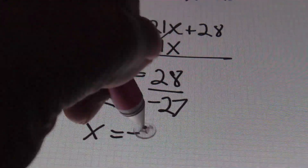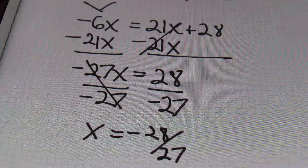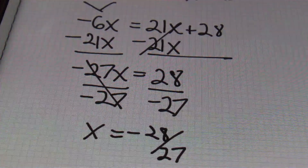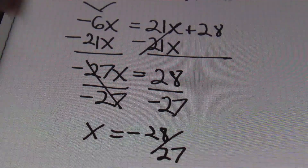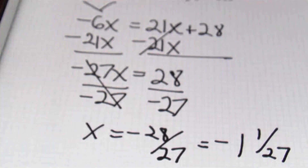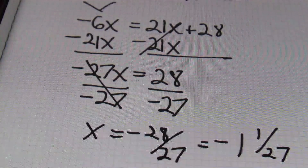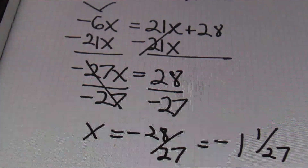Once again, the answer is negative 28 over 27. You can change it into a mixed number if you need to — it would be negative one and one twenty-seventh. Either form is correct, and that's the answer. Done and done.